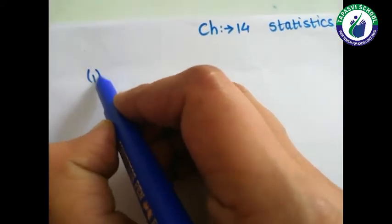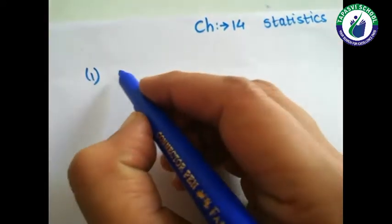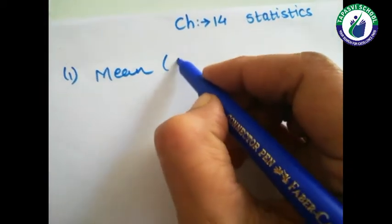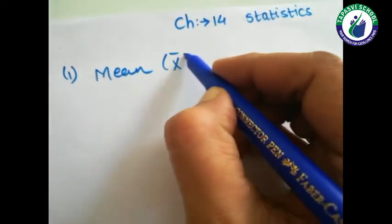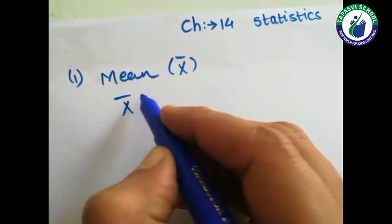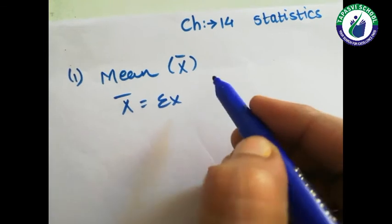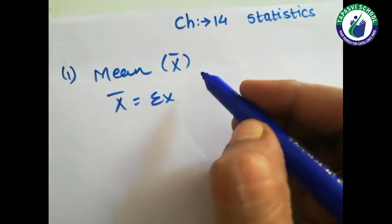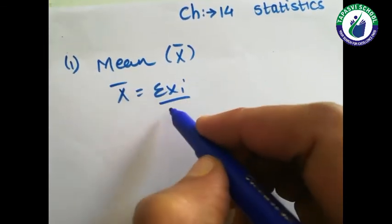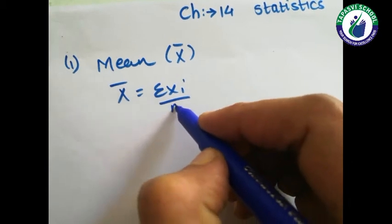In this chapter we are going to study the three measures of central tendency of ungrouped data. The first one is mean, denoted by x-bar. Here, x-bar equals sigma x-i, or f-i times x-i, upon n.